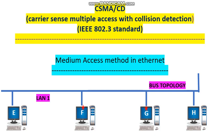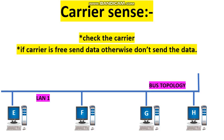Let us see what is the meaning of carrier sense. If station E wants to send data to station F, before sending the data, station E should sense the carrier — that is, it should check the carrier. If the carrier is free, then it can send the data; otherwise, it cannot send the data.